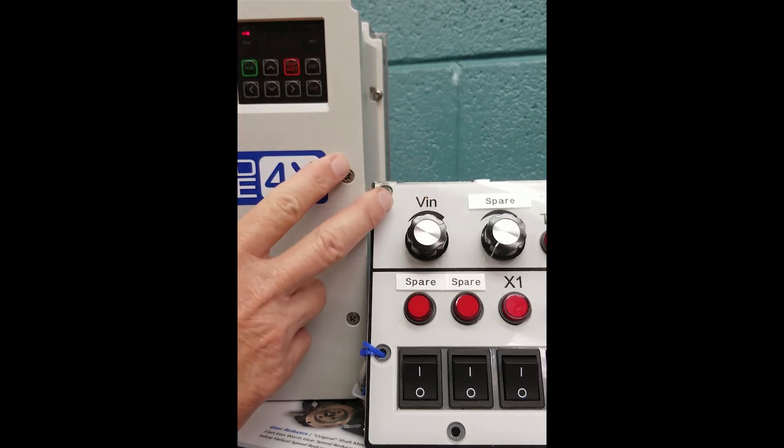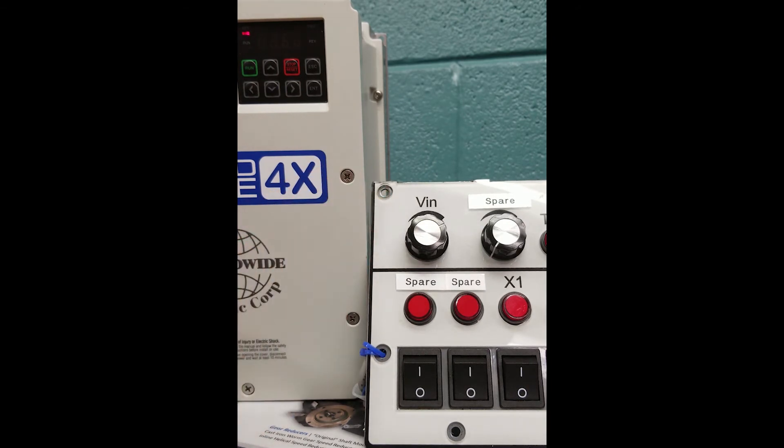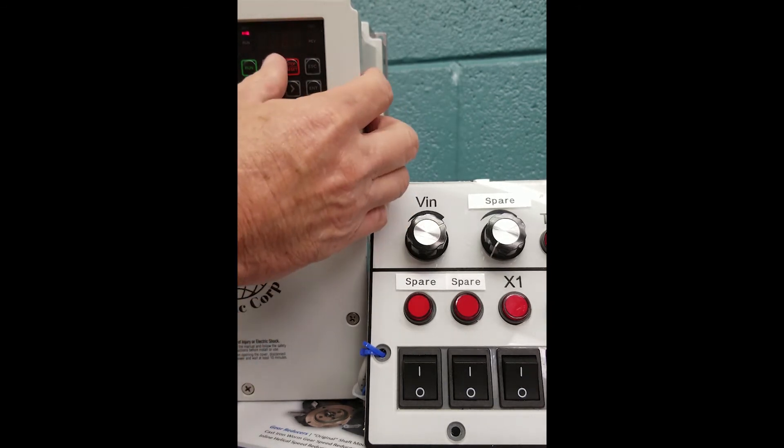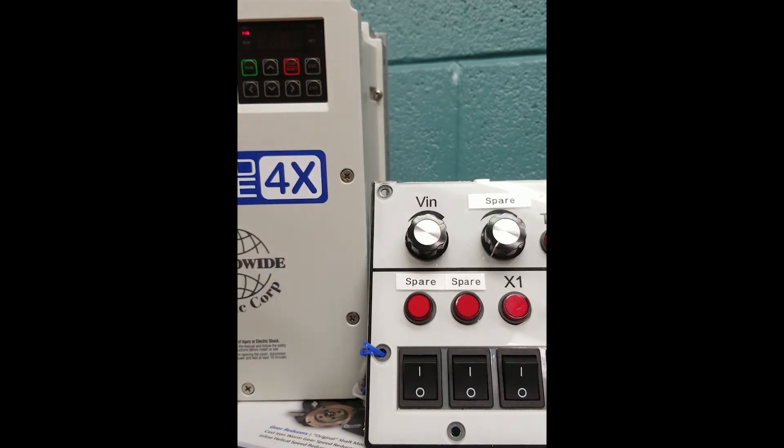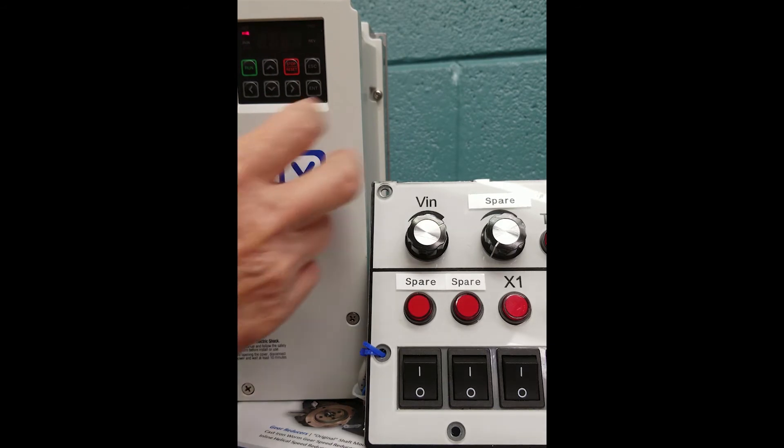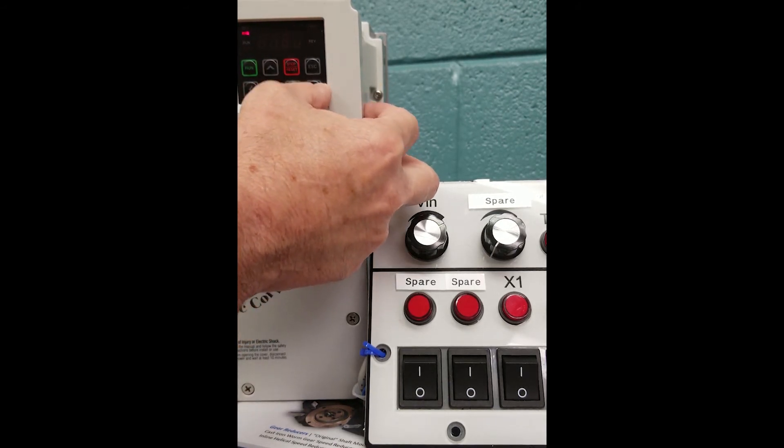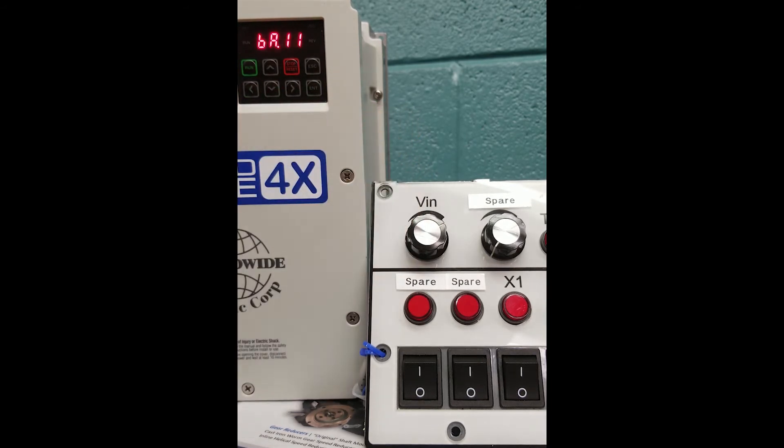We'll hit enter. Factory default is 4 pole, 1800 RPM. We could scroll down to 2 pole, 3600 RPM, or we can scroll up to 6 pole, 1200 RPM, and so on. We're going to leave it at 4 and hit enter to store that value.